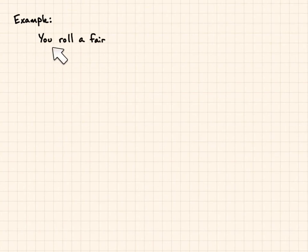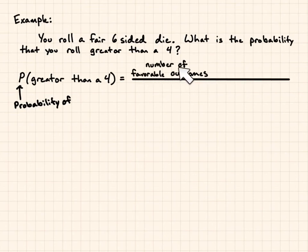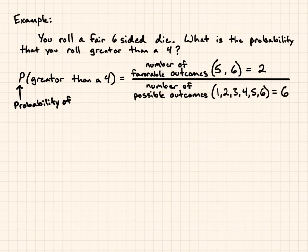Our first example. You roll a fair, meaning equally likely to happen any number, six-sided die. What is the probability that you roll greater than a 4? The probability of greater than a 4 is going to be the number of favorable outcomes. On a dice, the favorable outcomes, if you're trying to go greater than a 4, are going to be 5 and 6. That's two favorable outcomes over the number of possible outcomes. And on a 6-sided dice, it would be 1, 2, 3, 4, 5, 6. So, six possible outcomes.